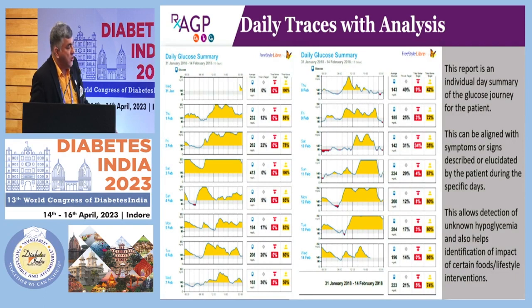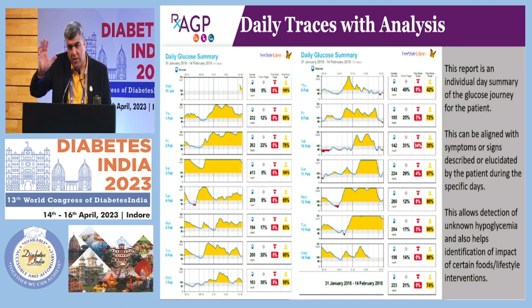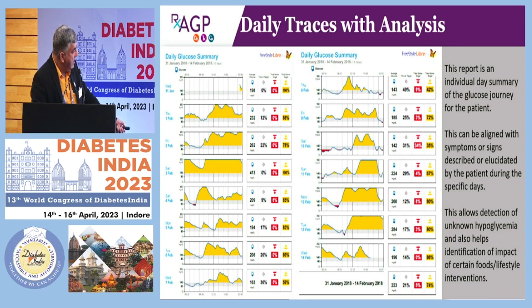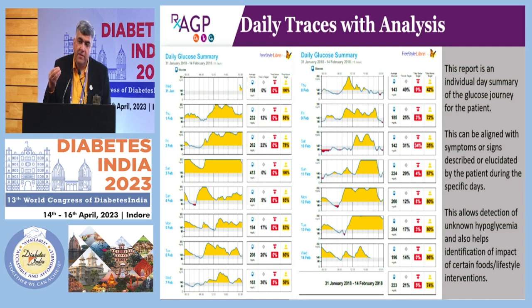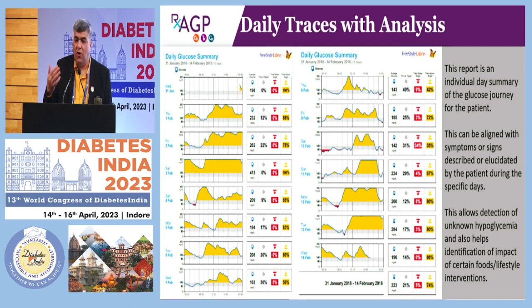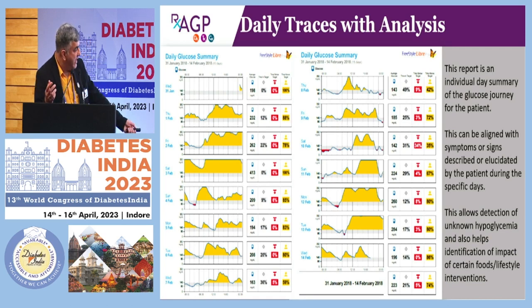Then you have the daily report, which is important because you also want to see what's happening on each day. The first report is a complete summary of the profile, but this shows each individual day with the time in range for each day. This is important to see what's happening on a particular day, because very often when you use CGM — especially professional CGM — you ask the patient to also write down everything in a logbook about what they ate and when they went for a walk. So if you see spiking on three out of 14 days, you can go and see what they ate on those particular days.